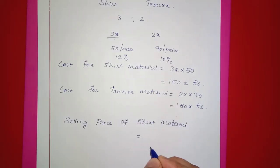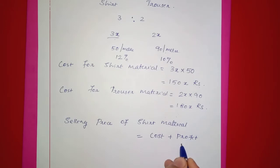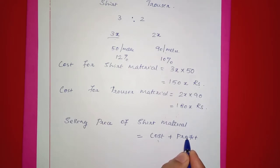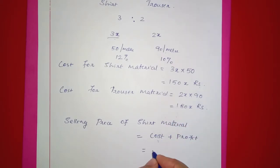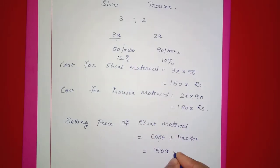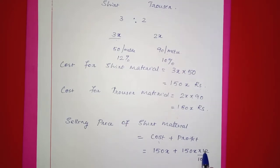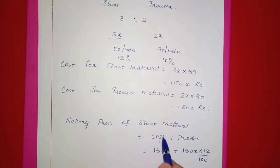We need to find the selling price of the shirt material. The selling price equals cost price plus profit. The cost price of the shirt material is 150x rupees. We calculate the profit as 150x multiplied by 12 divided by 100.